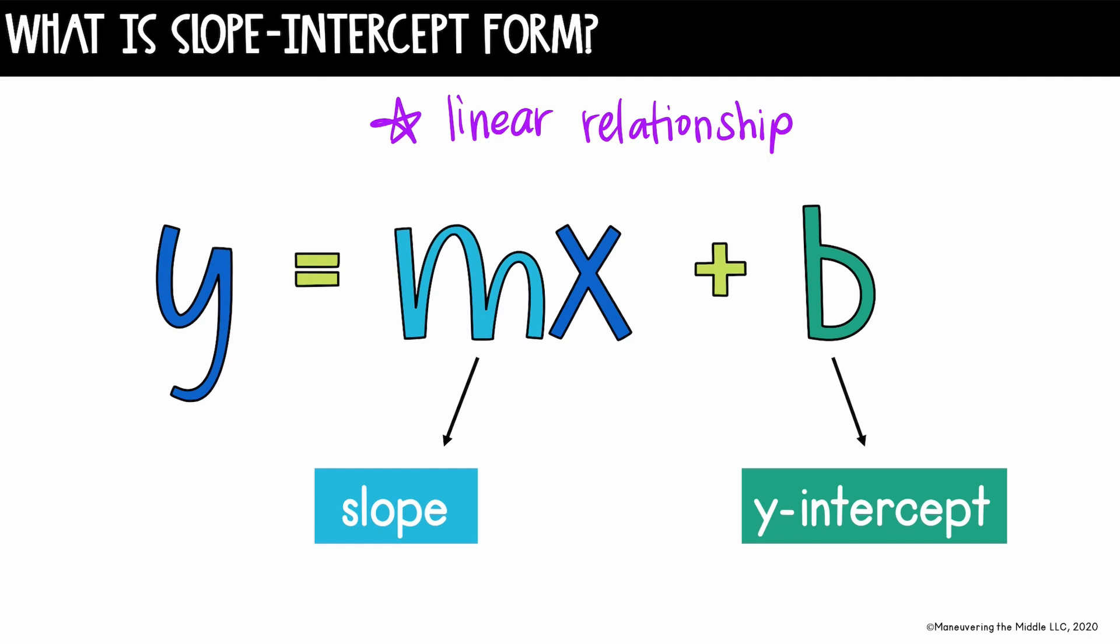A couple of things to point out here. The coefficient, or the value being multiplied by x, is m, which is your slope. It's equal to the rate of change or the slope of the line, and it is always next to x as the coefficient. Then b is what we just talked about. It is the y-intercept, or the value of y when x equals zero.